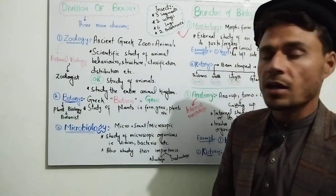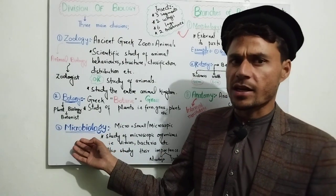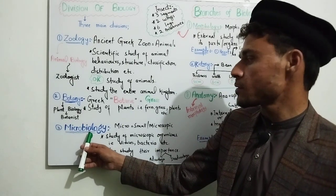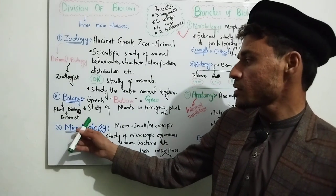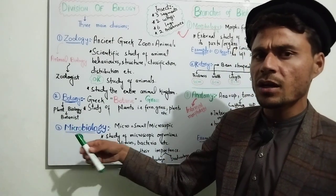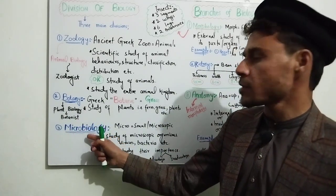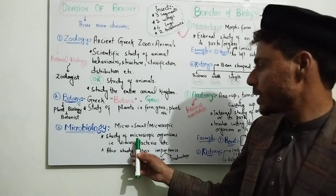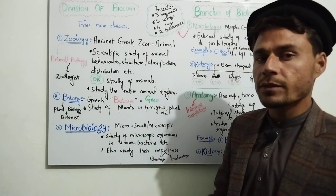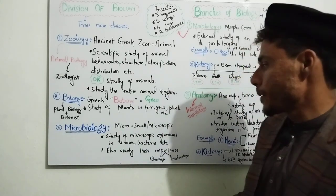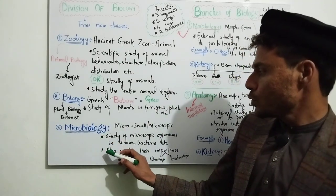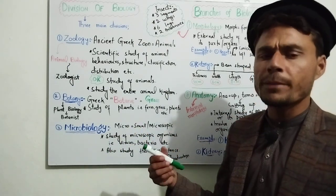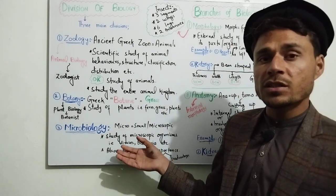The third division is microbiology. Microbiology is the study of living things that are microscopic and small. The study of microscopic organisms like viruses, bacteria, and microscopic fungi is called microbiology. Microbiology also covers the advantages and disadvantages of microorganisms.